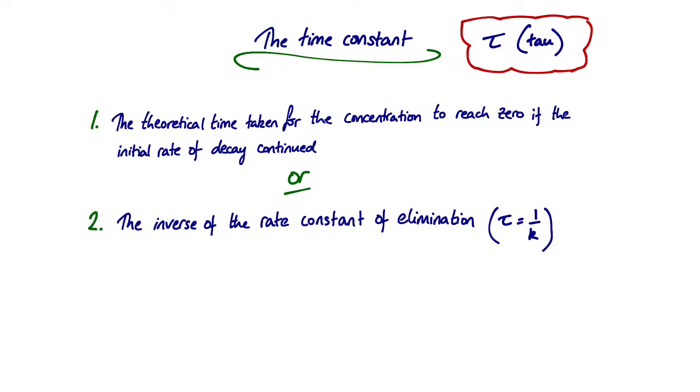Another definition is that the time constant is the inverse of the rate constant of elimination, or mathematically tau equals one over k. We'll come back to explain this. Or you could say that the time constant is the time taken for the concentration to fall by one over e of its former value. Analogous to the half-life being the time taken to fall to one over two or half of its initial value, the time constant is the time taken to fall to one over 2.7-something-something, so to fall to less than half of its former value. Therefore, the time constant will always be longer than the half-life because the reaction is going to a further stage.